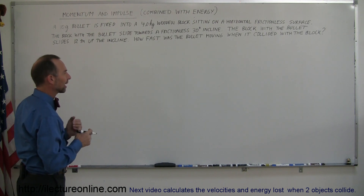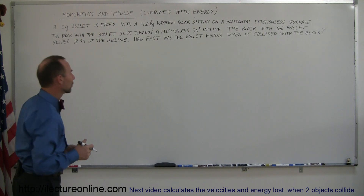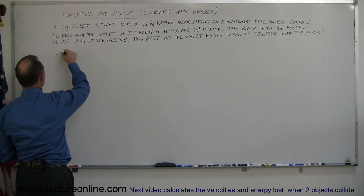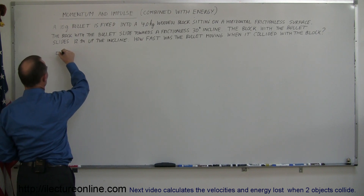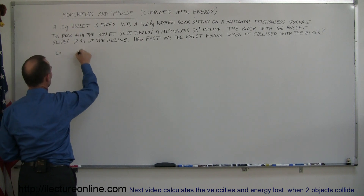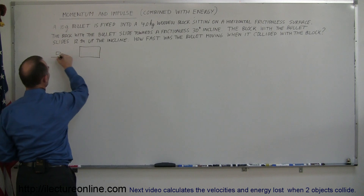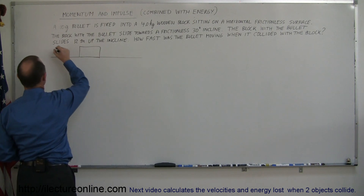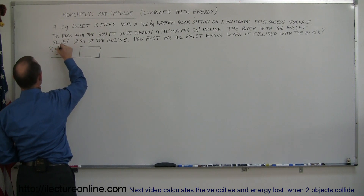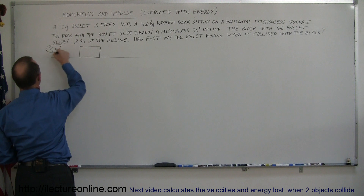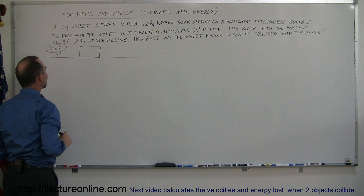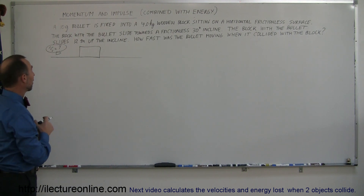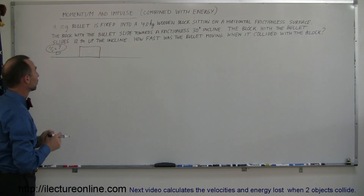Let's draw a picture to get a feel of what's going on here. I have a bullet that is fired into a wooden block sitting on a frictionless surface, and the initial velocity of the bullet is what we're looking for — we don't know what it is, and that's what the question asks.